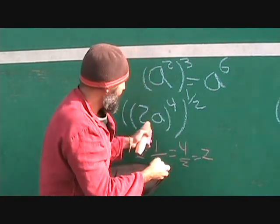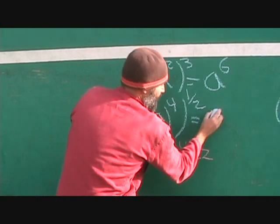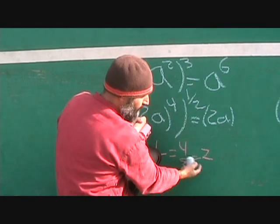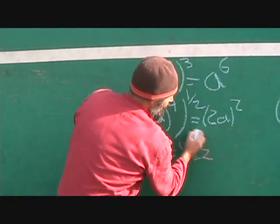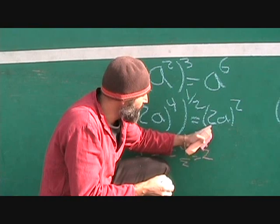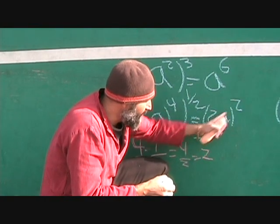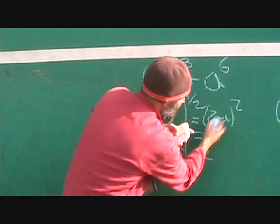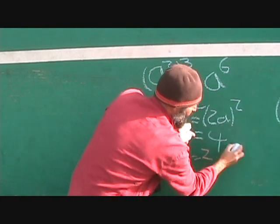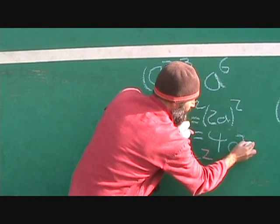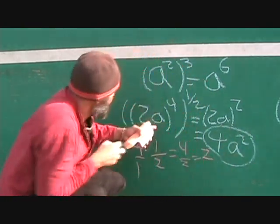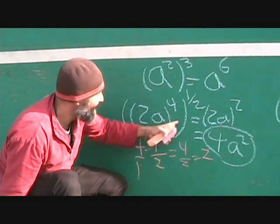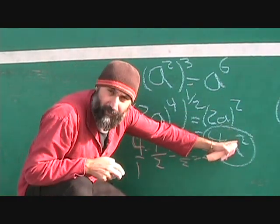So this becomes 2a to the power of 2. And we already talked about 2a to the power of 2 — this is distributive, it applies to both terms. So 2 squared is 4, and a squared is a squared. Therefore 2a to the power of 4, all to the power of a half, equals 4a squared. That's your answer.